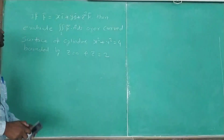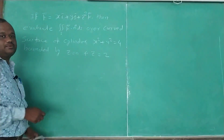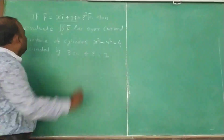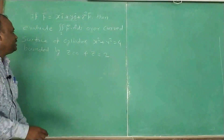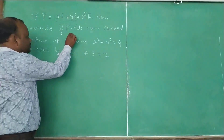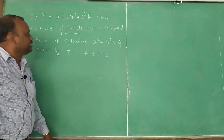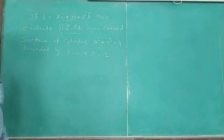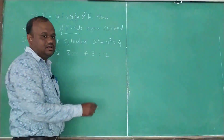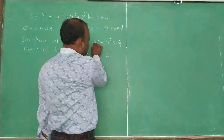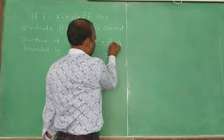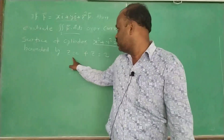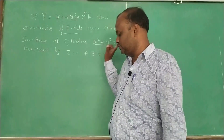The problem is: if f̄ = xī + yj̄ + z²k̄, then evaluate the double integral over surface S of f̄·n̂ dS over the curved surface of the cylinder x² + y² = 4, bounded by the planes z = 0 and z = 2.